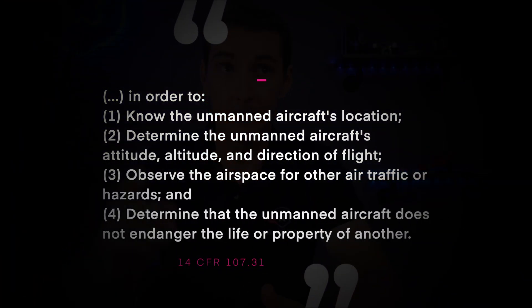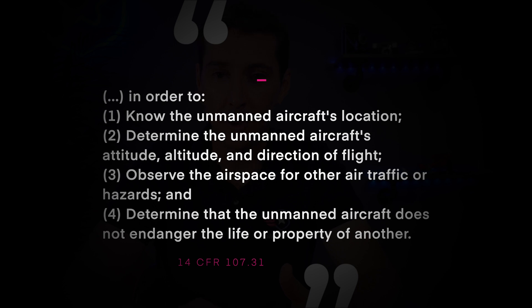Now let's look at the 'how' — what actually constitutes visual line of sight, which is defined in 107.31 as four different things. First, you have to know the unmanned aircraft's location. Second, you have to determine the unmanned aircraft's attitude, altitude, and direction of flight by looking at the drone. Third, you need to observe the airspace for other aircraft or hazards. And fourth, you need to determine that the unmanned aircraft does not endanger the life or property of another. On the second point, a tiny little speck on the horizon is not good enough because you are not able to determine the attitude of the aircraft or its direction of flight.